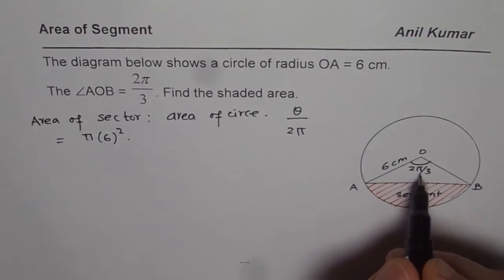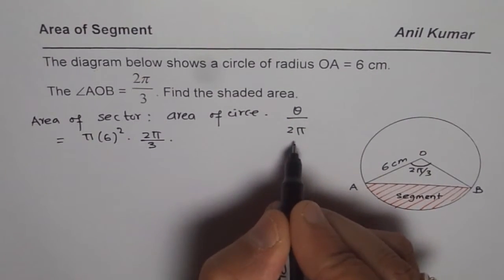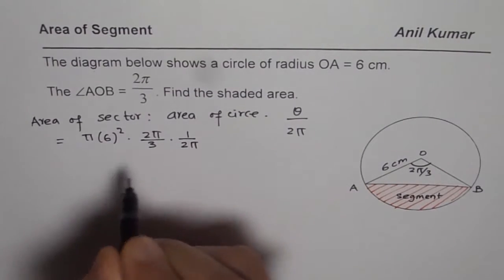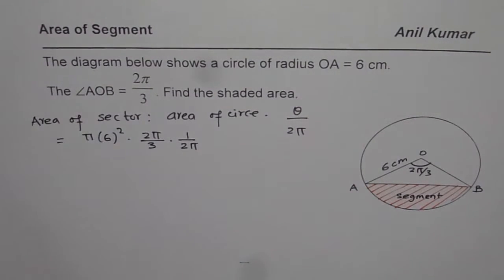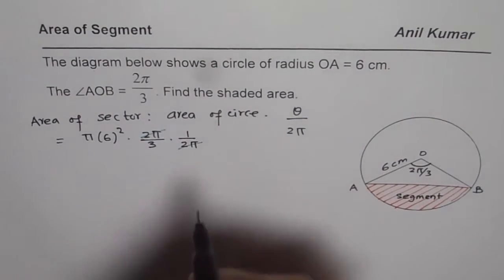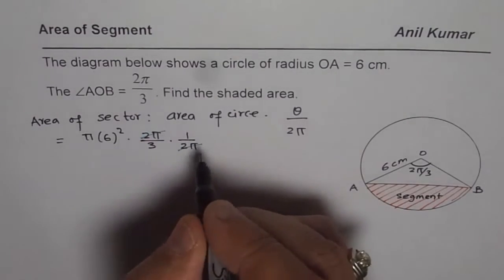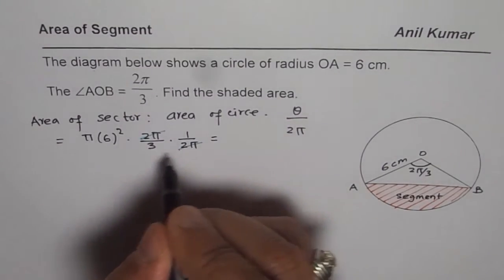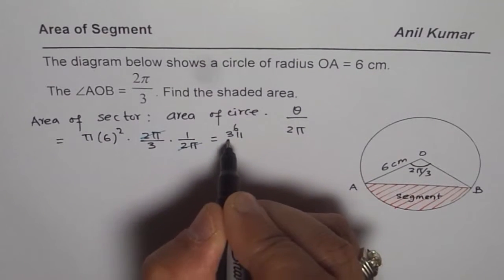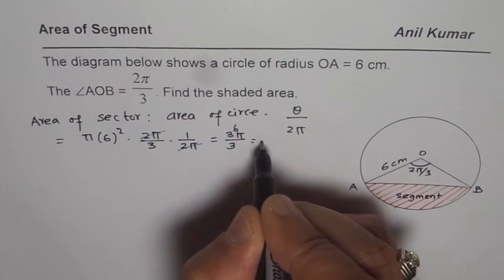Angle given to us is 2π by 3, so it is 2π by 3. And we have to divide by 2π, so it is 1 over 2π. So now we can simplify this. So 6 square is 36, 36π by 3 or 12π.